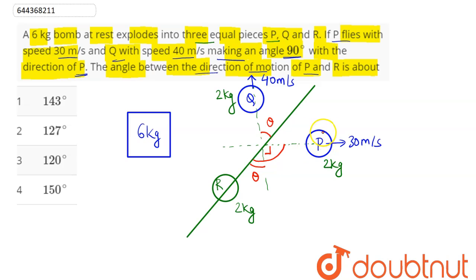Now, the momentum of particle P will be along x-axis with magnitude, as given here, momentum of P is equal to 2 into 30 as 60. As well as, momentum of Q will be along the direction of velocity given here as 2 into 40 as 80. So the resultant momentum, if we draw the triangle,